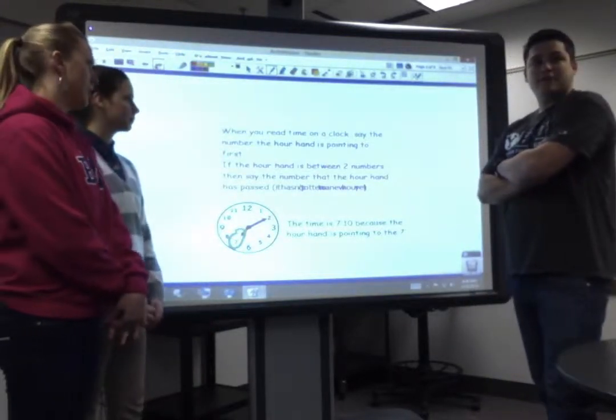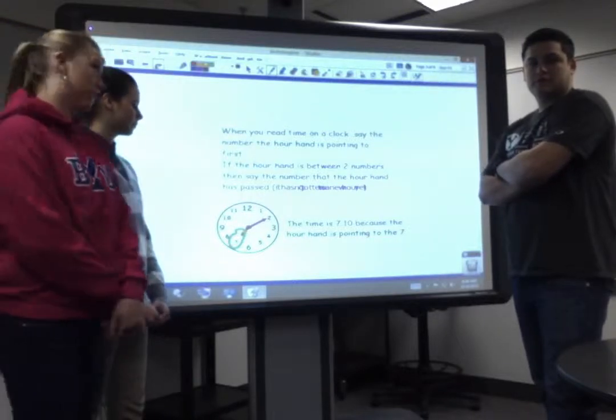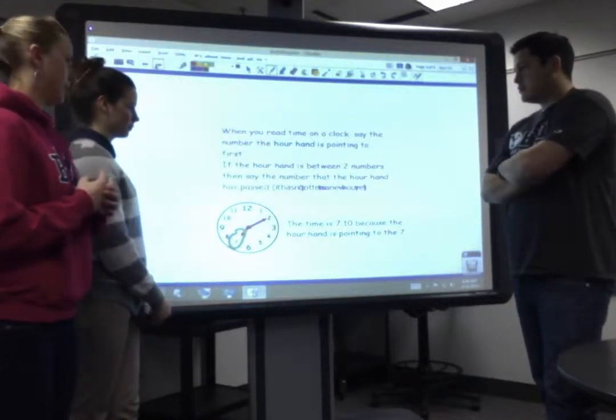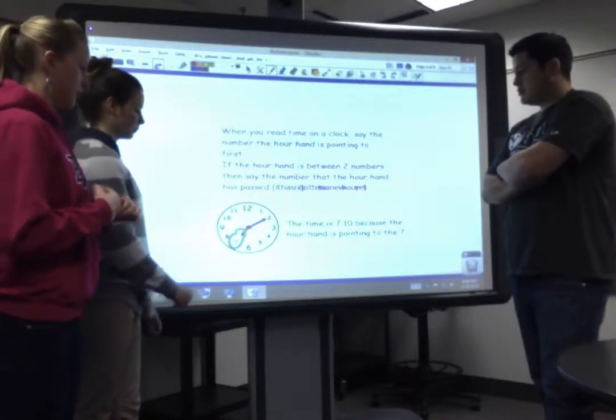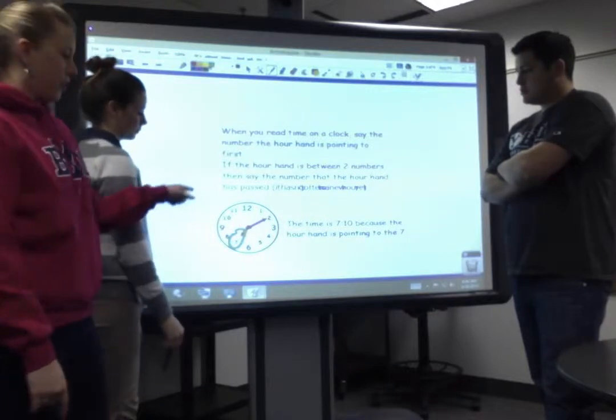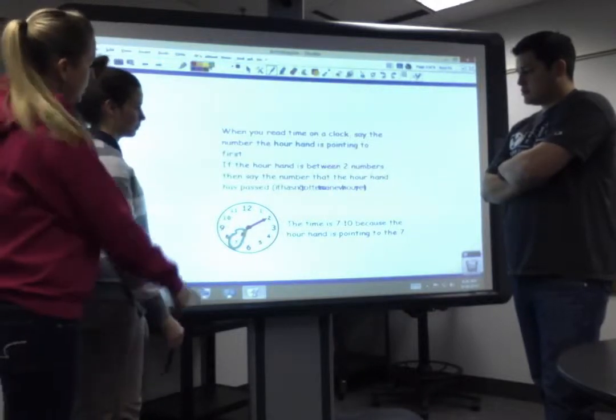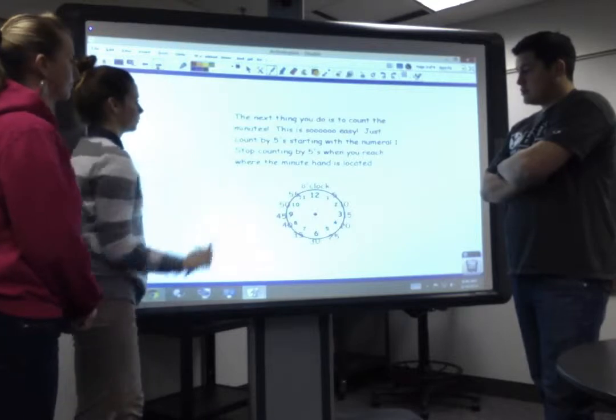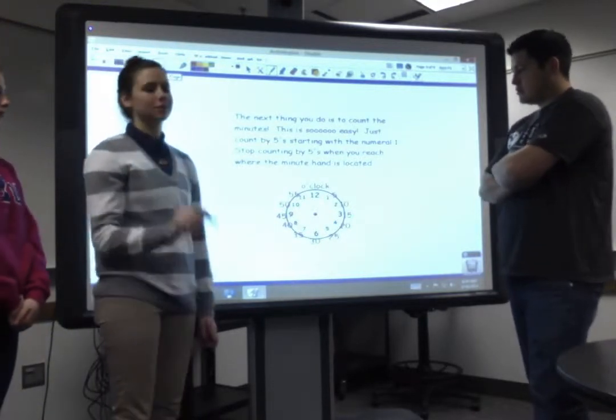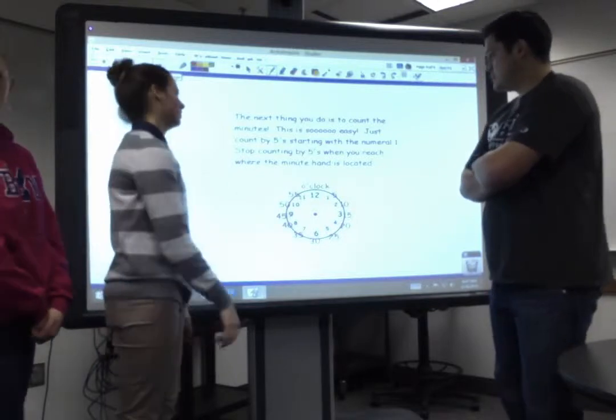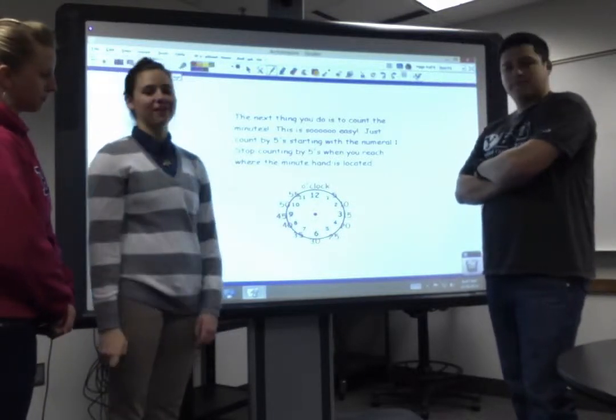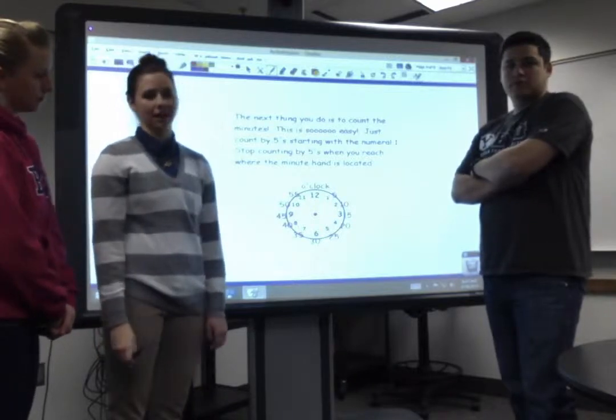When you read the time on the clock, say the number the hour hand is pointing to first. If the hour hand is between two numbers, then you say the number that the hour hand has passed. So in this case, the time is 7:10 because the hour hand is pointing to the 7. The next thing you do is count the minutes. This is so easy. Just count by 5 starting with the numeral 1. Stop counting by 5s when you reach where the minute hand is located.